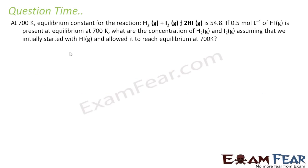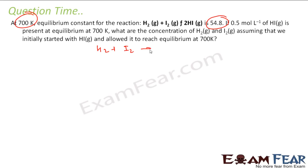The problem says at 700 Kelvin, the equilibrium constant for this reaction is 5.48. The reaction is H₂ plus I₂ (all gas) gives 2HI. A 0.5 mole per liter of HI is present at equilibrium.